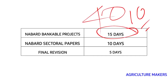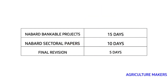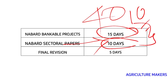Coming to the sectoral papers — there are nearly 6 or 7 sectoral papers, each about 50 to 70 pages. It is not necessary to cover everything; you only need to note the highlighted or boxed text, make notes, and revise. Take 10 days to cover all sectoral papers — roughly one sectoral paper per day. So we have covered 25 days in September, with the final 5 days in September for complete revision of NABARD bankable projects and sectoral papers.